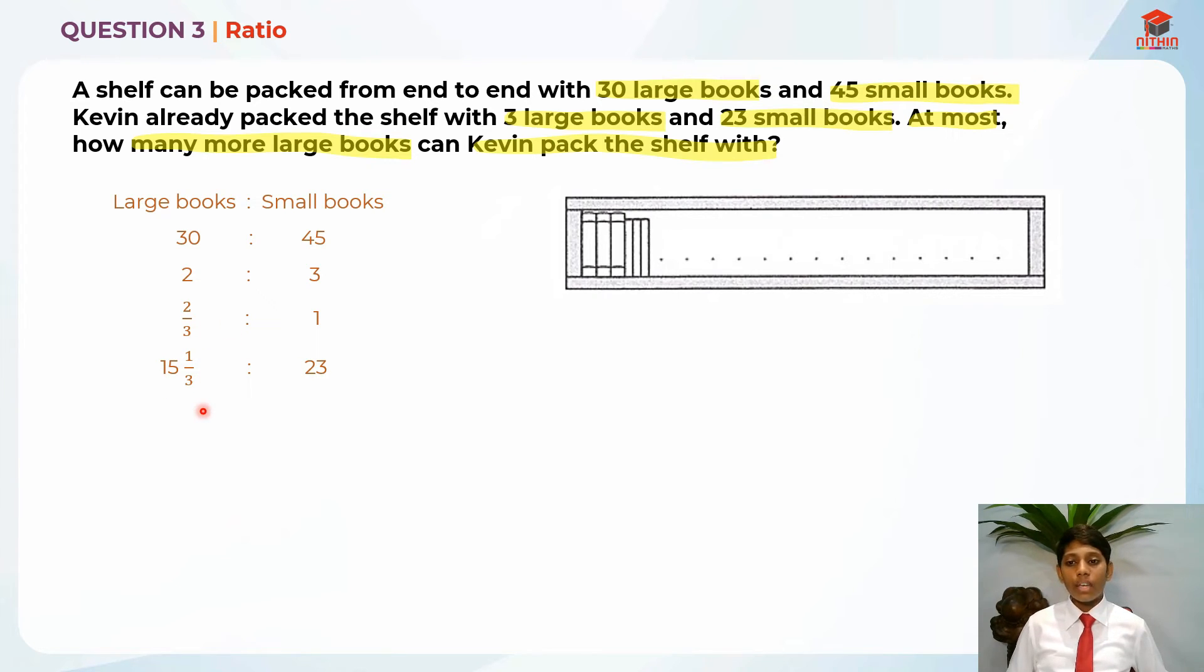So I'm going to find how many large books the bookshelf can handle. So basically, the space already taken, if we convert everything right, we are going to find the space already taken by so-called the large books because there are only three large books and 23 small books. But we are going to calculate the space given using the large books because we want to find how many more large books can we fit. At most. So basically, we're going to say 15 and one-third plus three, which will give us 18 and one-third.